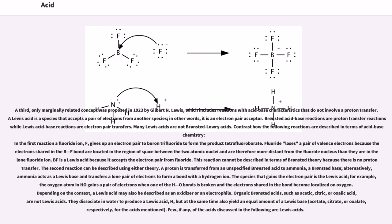For example, the oxygen atom in H3O+ gains a pair of electrons when one of the H-O bonds is broken and the electrons shared in the bond become localized on oxygen. Depending on the context, a Lewis acid may also be described as an oxidizer or an electrophile. Organic Brønsted acids, such as acetic, citric, or oxalic acid, are not Lewis acids. They dissociate in water to produce a Lewis acid (H+) but at the same time also yield an equal amount of a Lewis base—acetate, citrate, or oxalate, respectively, for the acids mentioned. Few, if any, of the acids discussed in the following are Lewis acids.